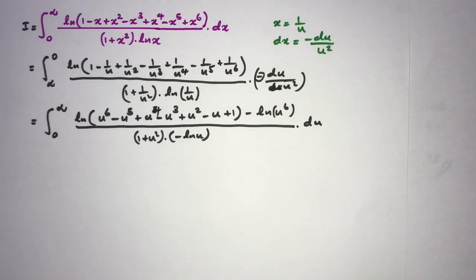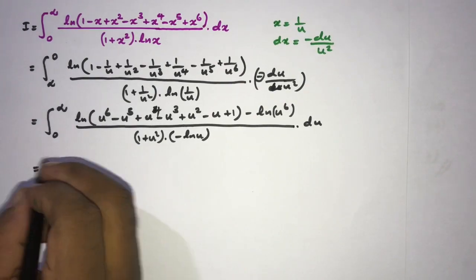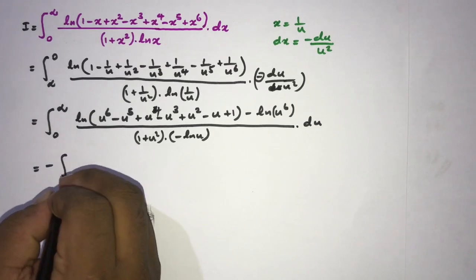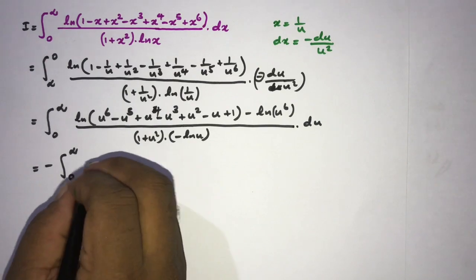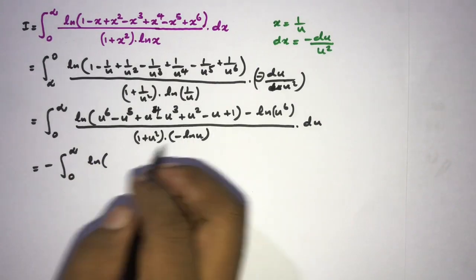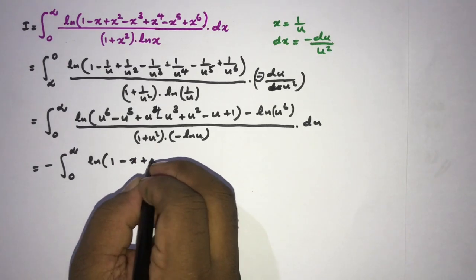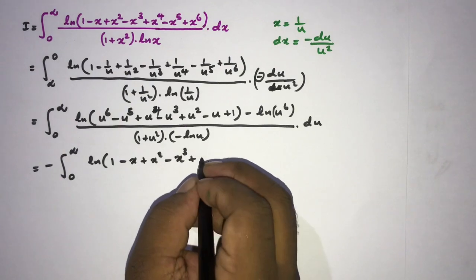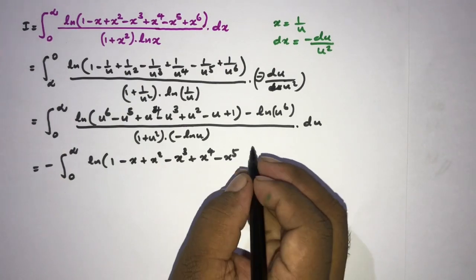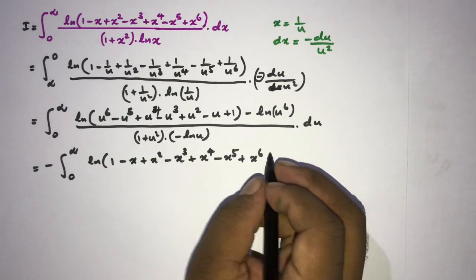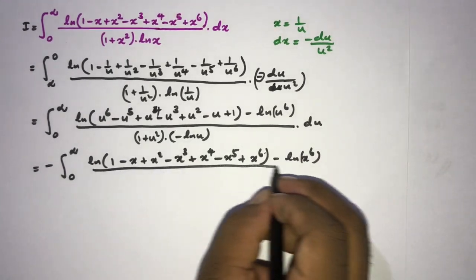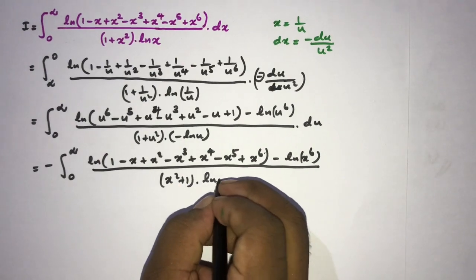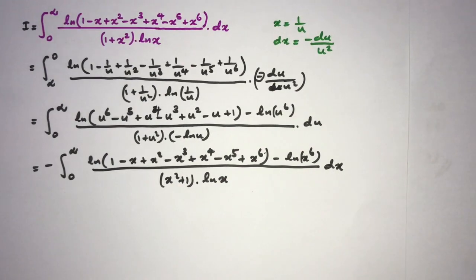We take the minus sign as a factor, giving minus times the integral from 0 to infinity. Since a definite integral is independent of the variable, we change u back to x, writing natural log of 1 − x + x² − x³ + x⁴ − x⁵ + x⁶, minus natural log of x to the sixth power, over (x² + 1) times natural log of x, dx.